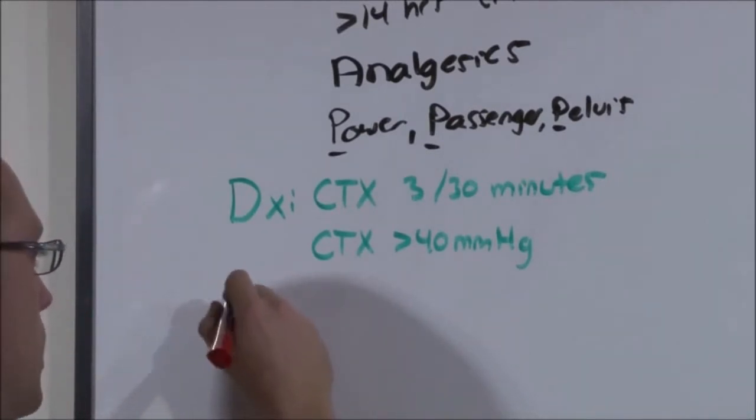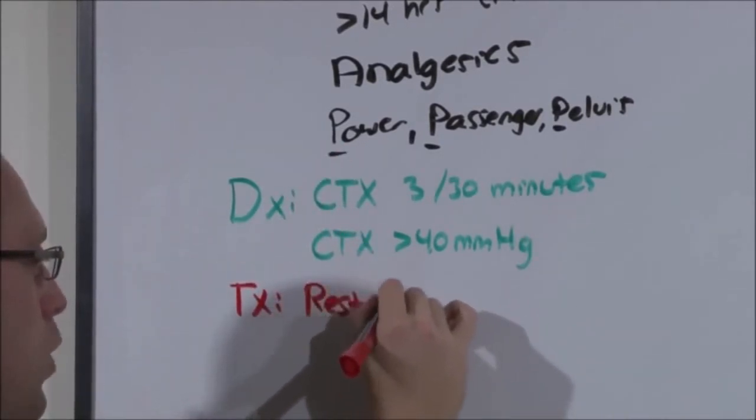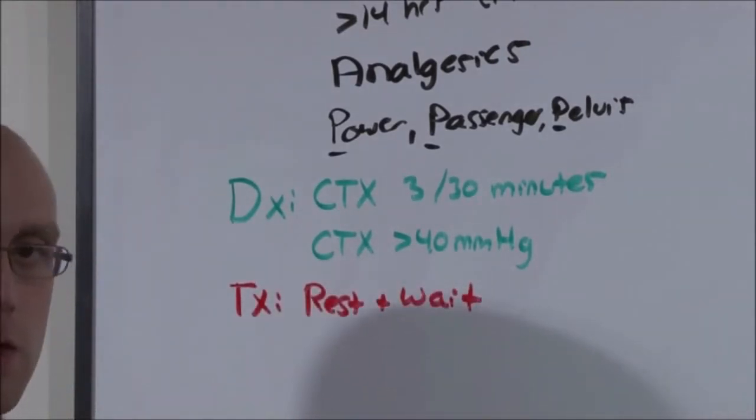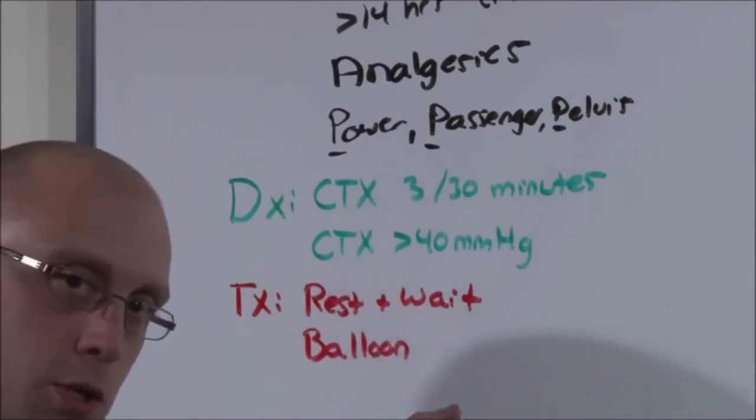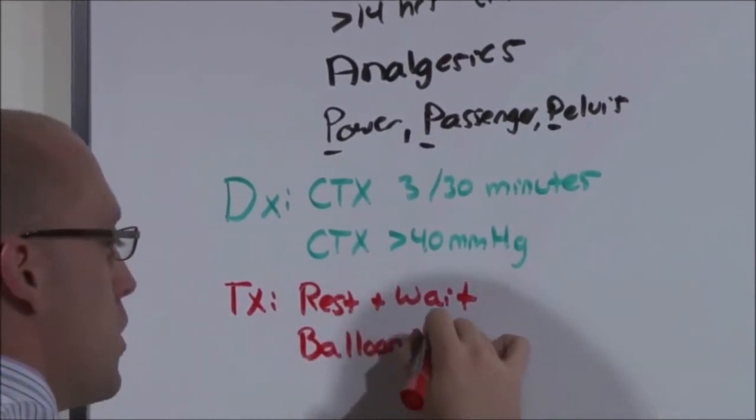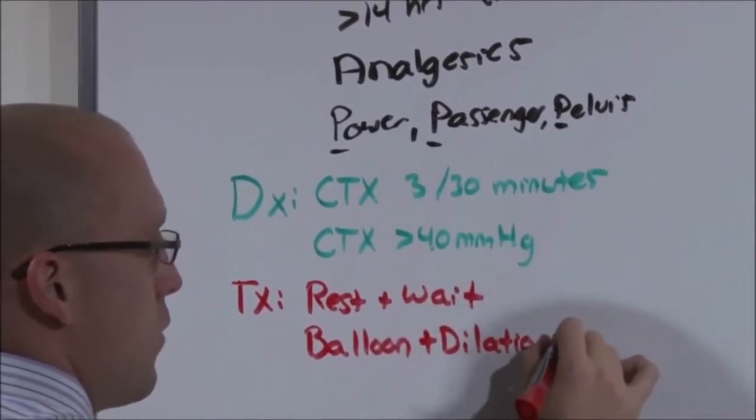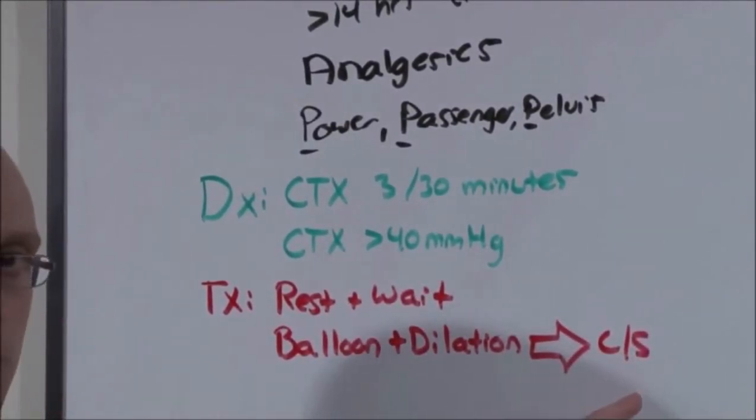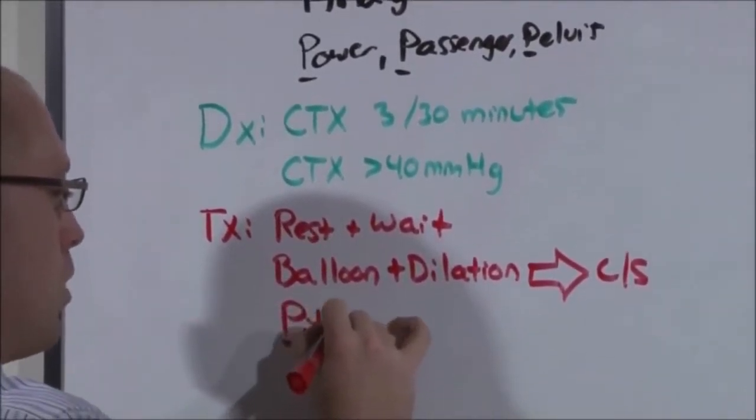So to treat prolonged latent phase, if it was our fault and we gave her analgesics, we just have her rest and wait. Our bad. If she has trouble getting going, that is there's very little cervical change despite long hours of the latent phase, what we can do is insert a balloon into her uterus, inflate it, and under pressure sort of pull back. And that balloon will simulate head engagement and stimulate the cervix to dilate. If that fails, likely we're going to see C-section because she's having contractions but nothing's happening. We've got to get baby out. And of course, if she has inadequate contractions, we can always try to augment her power with Pitocin.